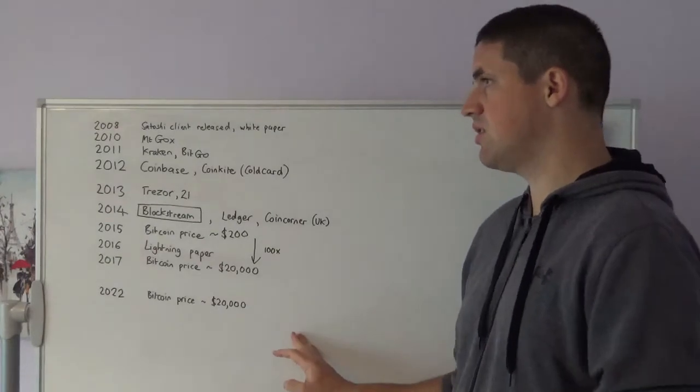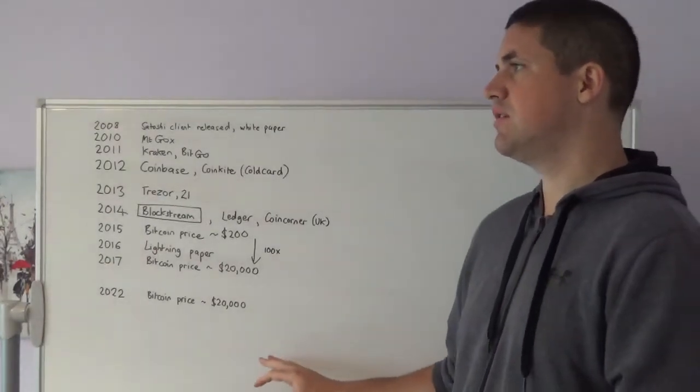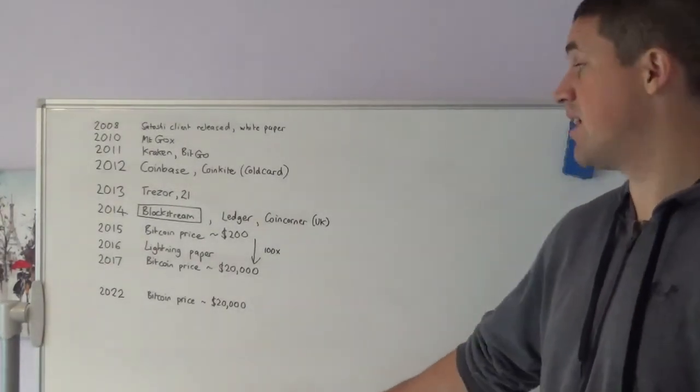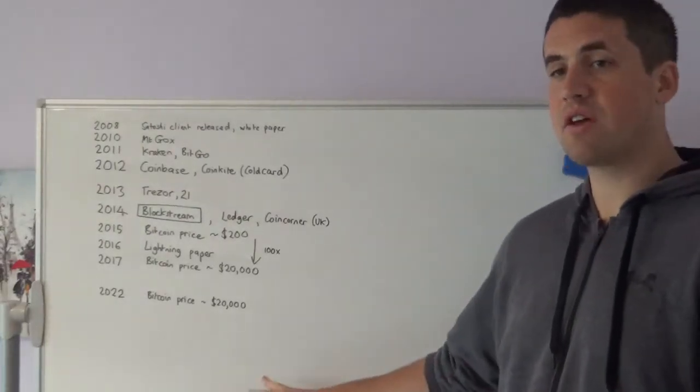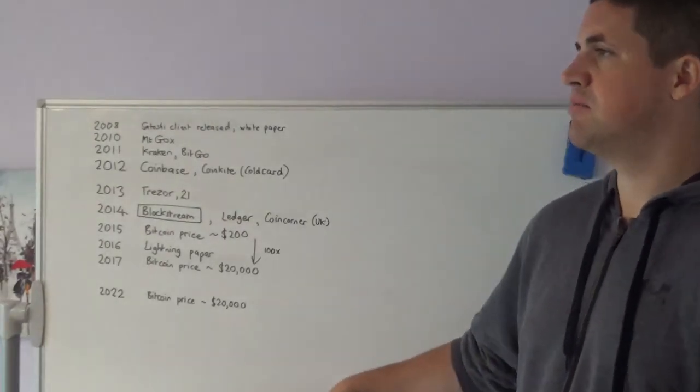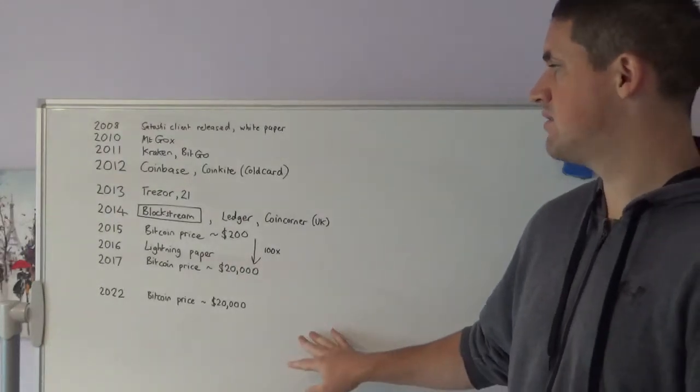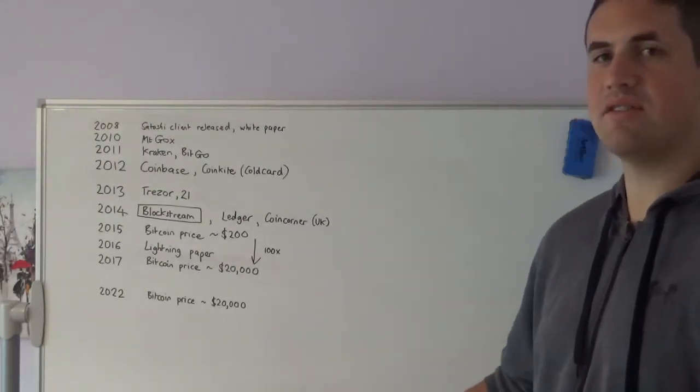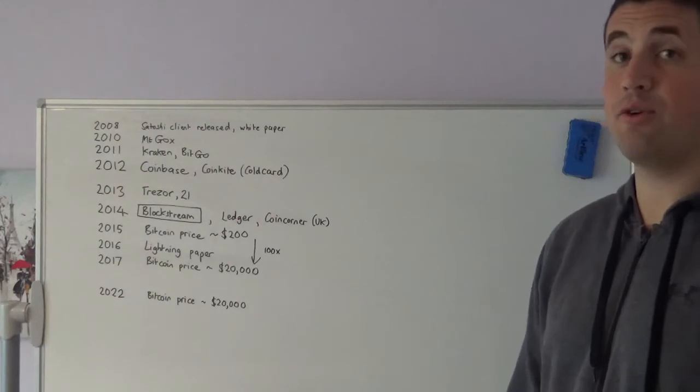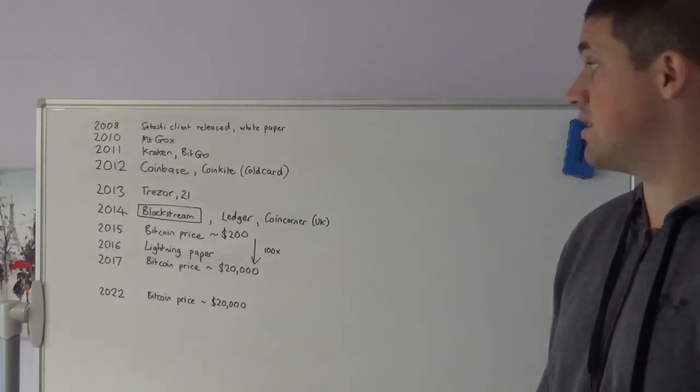I would certainly argue that if and when there ever is another massive price spike and everyone's going crazy trying to buy Bitcoin, we will need to have this ecosystem built out on top of Lightning for whenever that happens, if that happens.